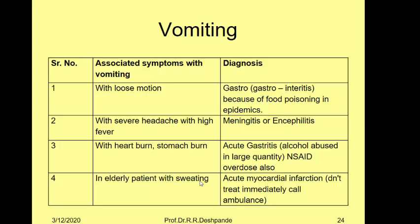This description has been written in a neat tabular form with associated symptoms and corresponding diagnoses. Vomiting with loose motion — gastroenteritis due to food poisoning, common in the rainy season. Vomiting with severe headache and high fever along with Babinski's sign — suggests meningitis or encephalitis. Vomiting with heartburn and chest burning — suggests acute gastritis due to alcohol or overdose of NSAIDs.